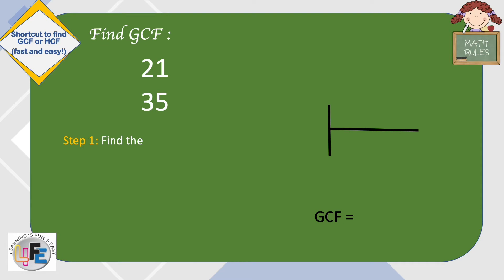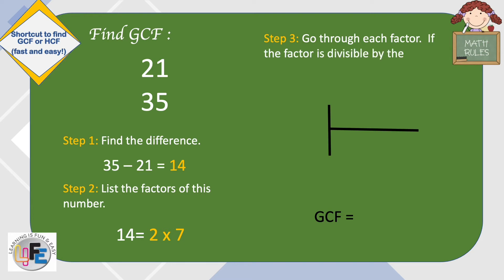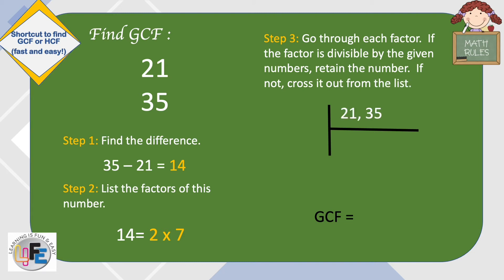Step 1: Find the difference of these two numbers. Step 2: List the factors of this number. Step 3: Go through each factor. If the factor is divisible by the given numbers, retain that number. If not, cross it out from the list. Step 4: The remaining factor is the GCF.